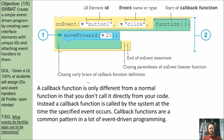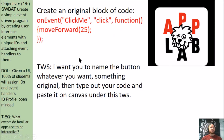A callback function is only different from a normal function in that you don't call it directly from the code. Instead, a callback function is called by the system at the time the specified event occurs. Callback functions are a common pattern in event-driven programming. Here's a great example: you'll have the keyword 'onEvent' — so when a UI element called 'button1' is clicked, the computer begins the associated function, which in this case says to move forward by 25 pixels.